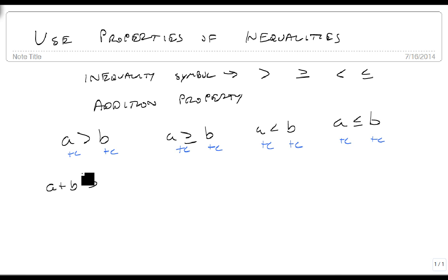Adding and subtracting the inequality, oops, that should be a c, the inequality stays the same. So this becomes a plus c is greater than or equal to b plus c, this is a plus c is less than b plus c, and this is a plus c is less than or equal to b plus c.